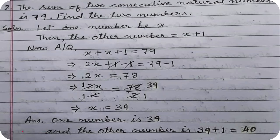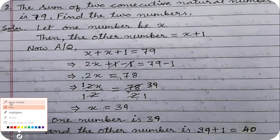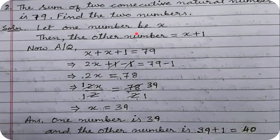Let one number be x. Then the other number will be x + 1. Why? Because consecutive numbers follow each other: if one number is 2 the next is 3, which is 2 + 1. If one number is 5 the next is 6, which is 5 + 1. So to get the immediate consecutive number, we add 1.